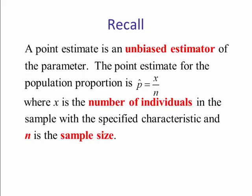Recall, a point estimate is an unbiased estimator of the parameter. The point estimate of the population proportion is p-hat, which equals x divided by n, where x is the number of individuals in the sample with the specified characteristic, and n is the sample size.